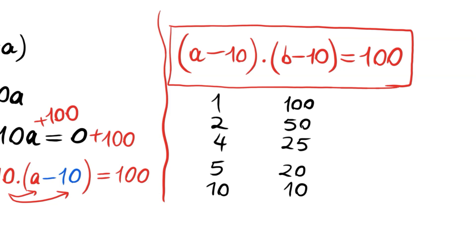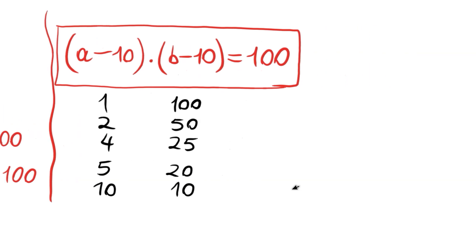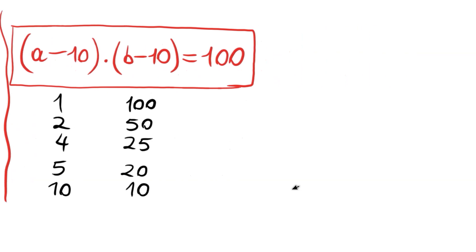We have these positive divisors of 100, and actually there are more. Let me just solve this. We have a is 11 and b is 110. We have a is 12 and b is 60. A is 14, b is 35.